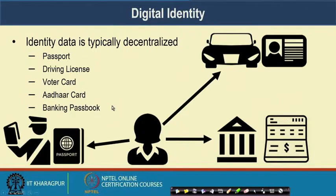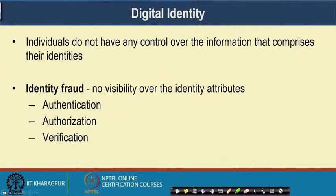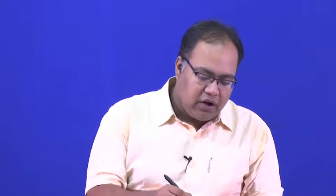All these different concepts together constitute identity. The key message is that as an individual you do not have any control over which attributes will uniquely identify you in a particular digital identity architecture. Because of this, we observe different kinds of identity fraud where users do not have any visibility on identity attributes. Identity fraud can come from an authorization perspective, where a false person or intruder can get authorized as a normal person, or from an authentication perspective where a false person can get authenticated to a server if they are able to access your identity.